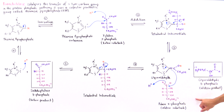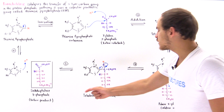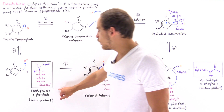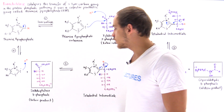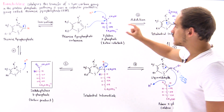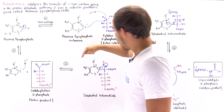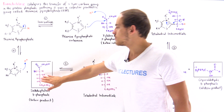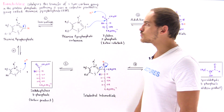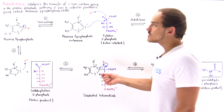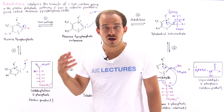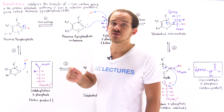In the process, two product molecules are formed: glyceraldehyde-3-phosphate, the aldose product, and the 7-carbon sugar sedoheptulose-7-phosphate, the ketose product. We ultimately transfer that two-carbon component to form these two products. This completes the reaction mechanism of transketolase. In the next lecture, we'll discuss the reaction mechanism of transaldolase, the other enzyme of the non-oxidative phase of the pentose phosphate pathway.